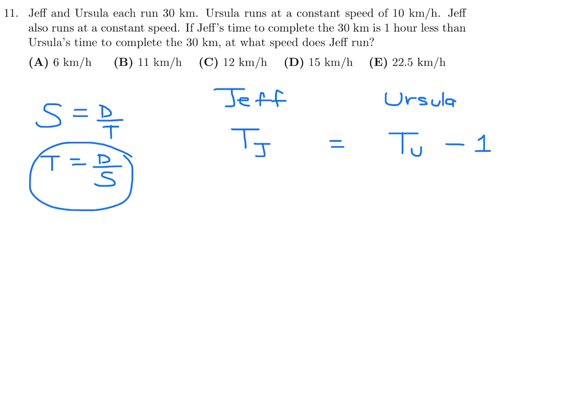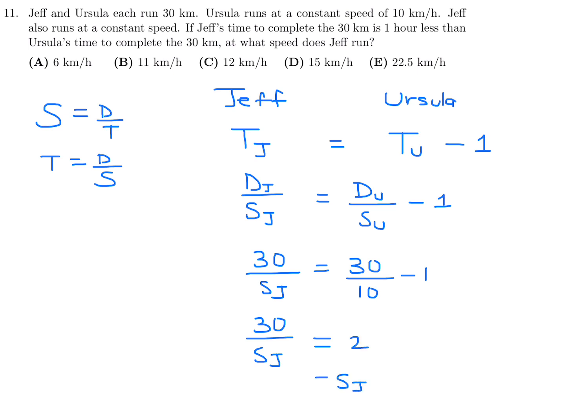So now we use this formula, D over S. So DJ, distance for Jeff over the speed of Jeff, is equal to the distance for Ursula over the speed of Ursula minus 1. The distance for both of them is 30, so that's pretty straightforward. But then the speed of Ursula has been given as 10 kilometers per hour. So we got 30 over SJ, and this looks like 30 divided by 10 is 3, 3 minus 1 is 2. So that means cross-multiplying, we get SJ is 30 divided by 2, which is 15 for the speed of Jeff.